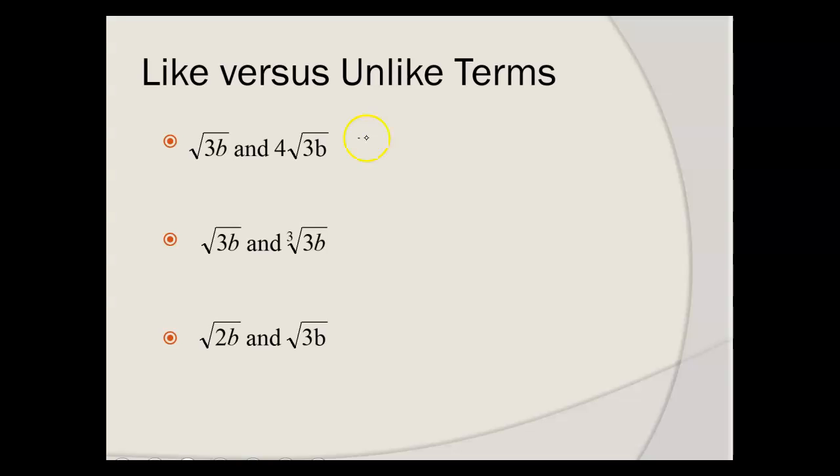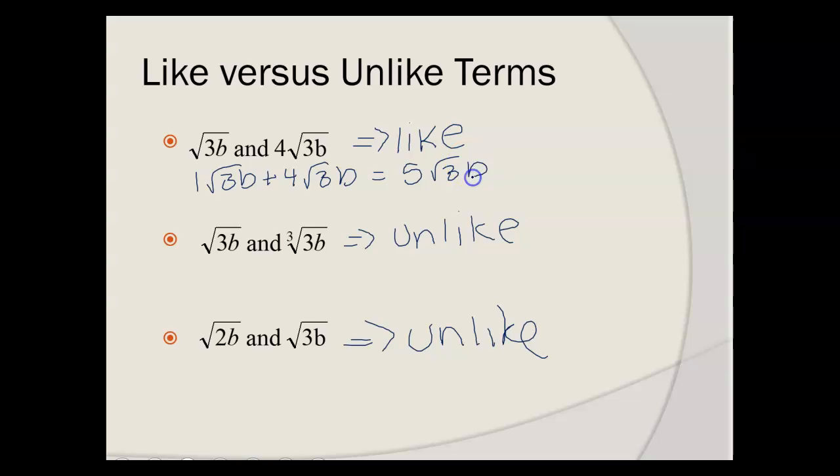So, square root of 3b and 4 square roots of 3b, like or unlike? Like. That means that this is really able to be added or subtracted. Square root of 3b and cube root of 3b, like or unlike? Unlike. Why are they not like terms? Because cube root is not square root.